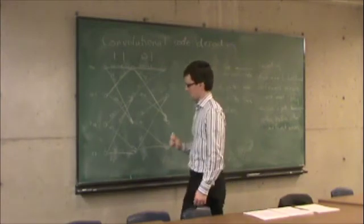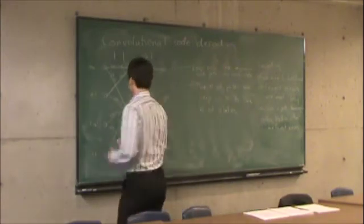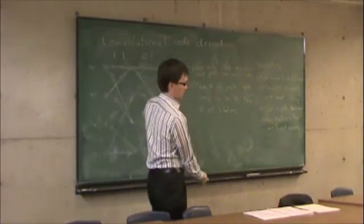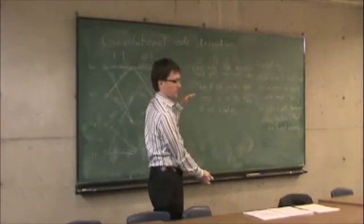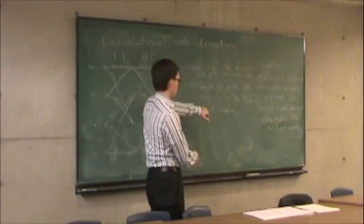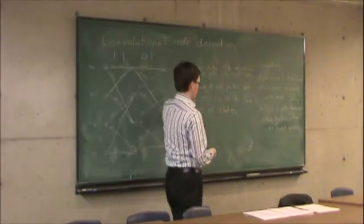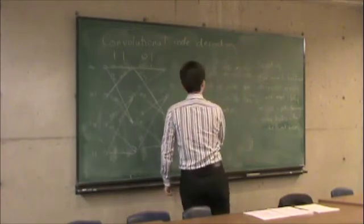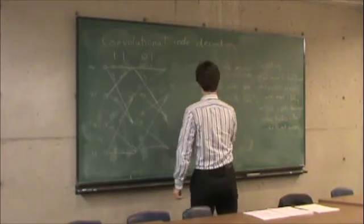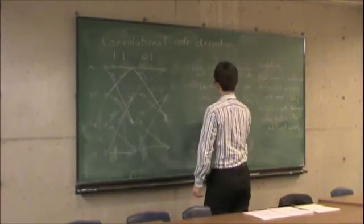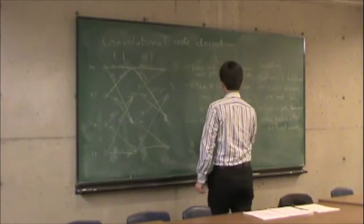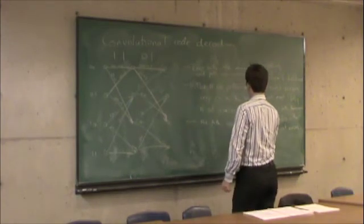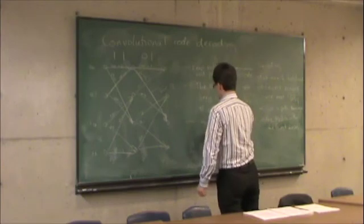The complexity scales linearly in the length of the code and exponentially in the number of flip-flops, because the number of states increases exponentially as you increase the number of flip-flops. The paths you keep are called survivors.